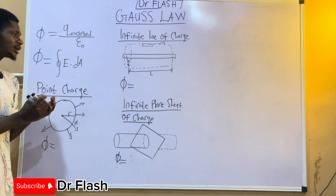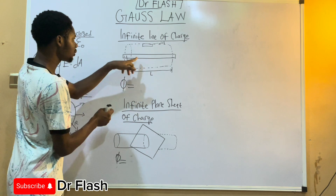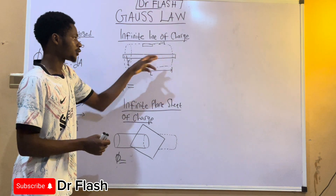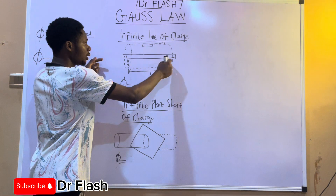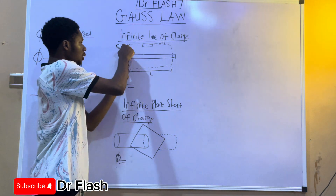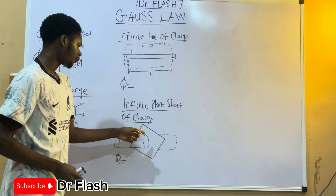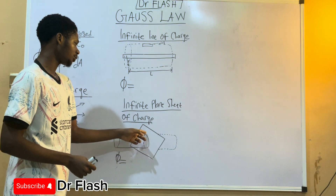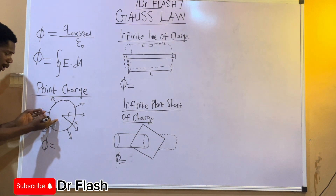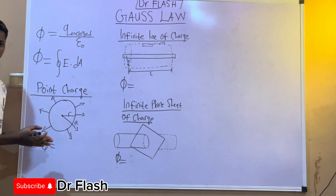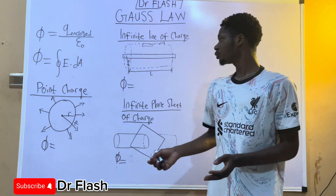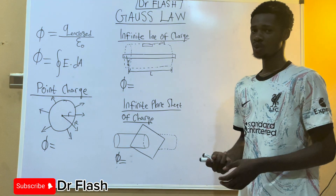The enclosed charge means the surface has to be closed for the law to work. For example, for an infinite line of charge — a straight wire — we assume an imaginary Gaussian surface to calculate the flux. For a plane sheet of charge, we also have a Gaussian surface. For a spherical charge, no extra Gaussian surface is needed since we assume the charges are spherical.